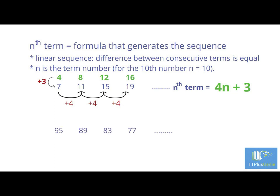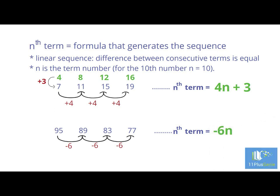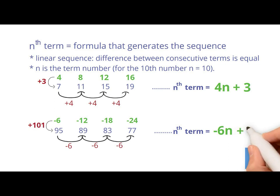Look at this sequence: 95, 89, 83, 77. Find the common difference. To get from 95 to 89 we minus 6, from 89 to 83 is minus 6, and from 83 to 77 is minus 6. This is the minus 6 times table and we immediately write minus 6N. Above the given sequence write down the minus 6 times table. What must we do to minus 6 to get to 95? We must add 101. The Nth term for this sequence is minus 6N plus 101.